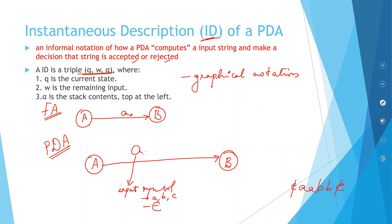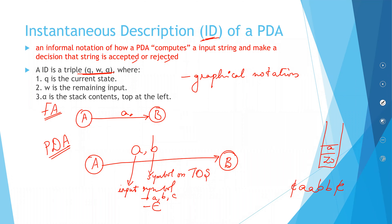As I told you, it is a triple. The second element, B, is the symbol on the top of the stack. For example, if my current symbol on top of the stack is A or B, that becomes the second element of the tuple.